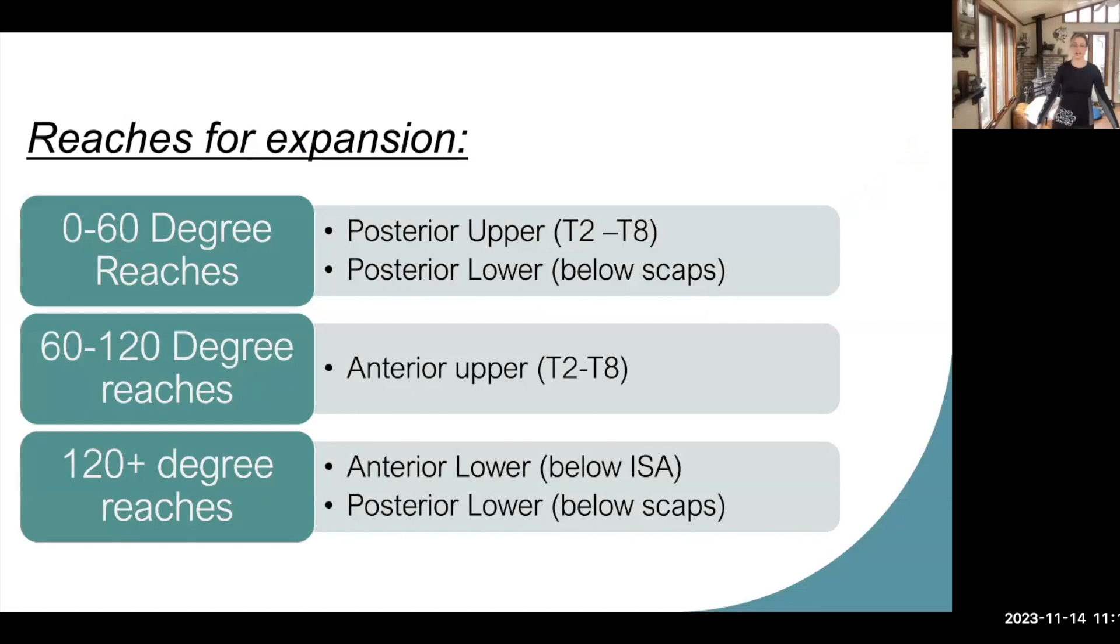How we reach can determine where we have expansion in our thoracic cage. If we reach down below from about 0 to 60 degrees, there's not a lot of scapular motion there. So we can get a lot of posterior expansion. We're basically getting all posterior expansion across the entire low back if we do a nice low reach. It's one of the easiest reaches.